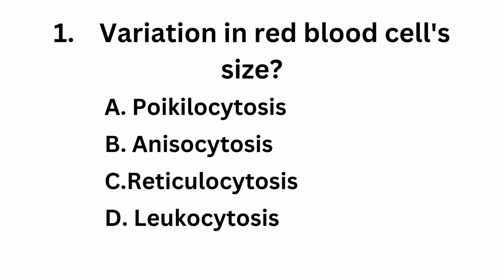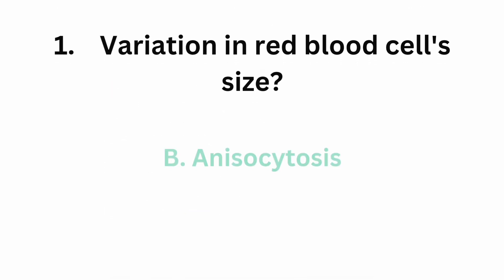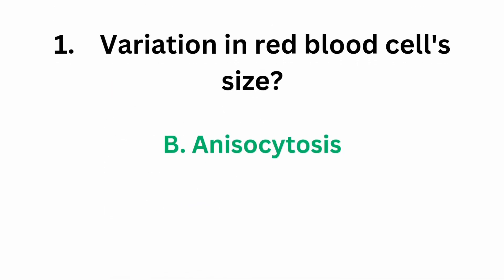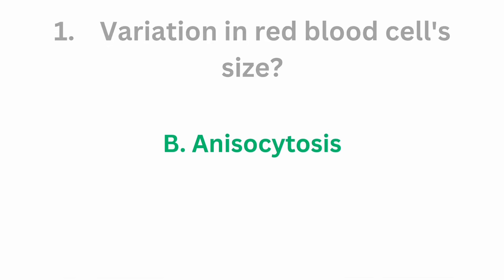First question: variation in red blood cells size. Option A, poikilocytosis. Option B, anisocytosis. Option C, reticulocytosis. Option D, leukocytosis. The correct answer is option B, anisocytosis. Anisocytosis is the variation in red blood cells size.